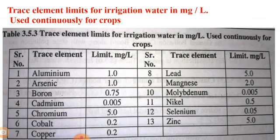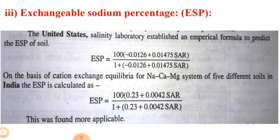Additional trace elements in the chart include selenium and zinc, with their respective limits in milligrams per litre. There are 13 elements total, including lead, manganese, molybdenum, and nickel. For irrigation water quality assessment, analysis generally involves determination of EC, pH, water-soluble cations, and anions.